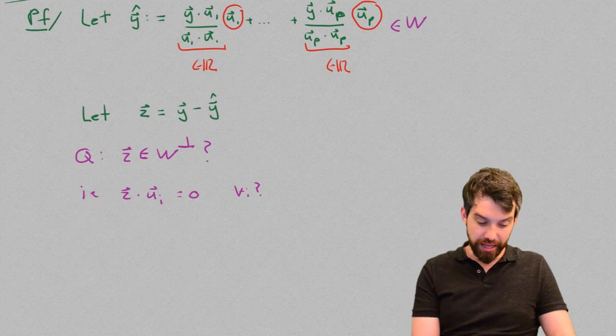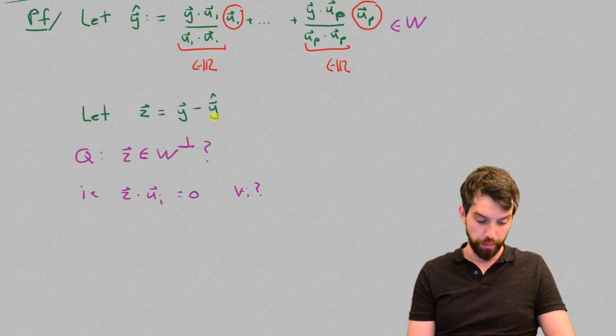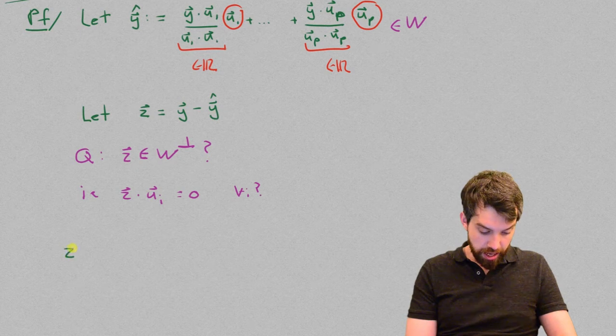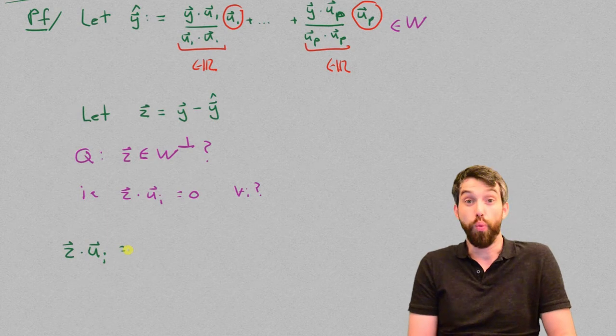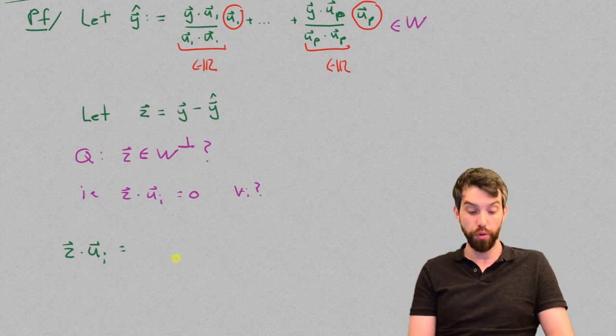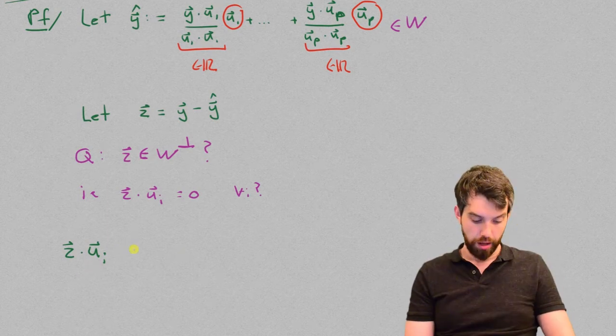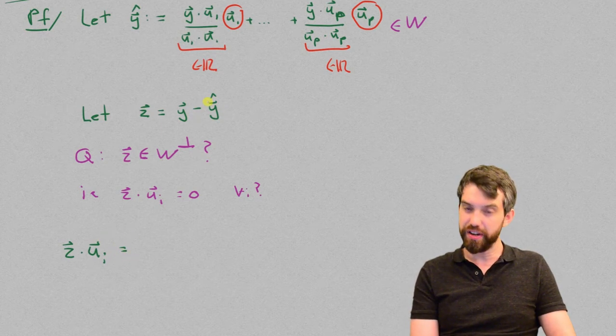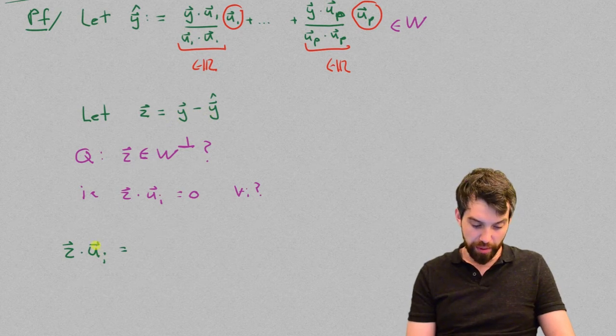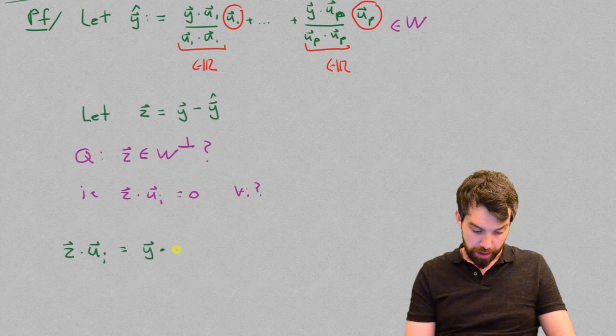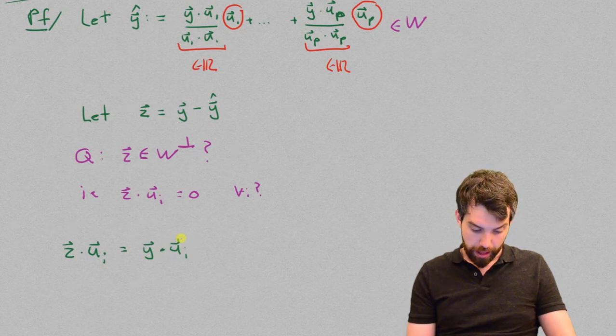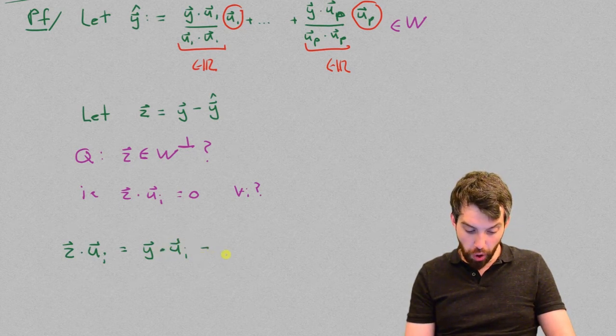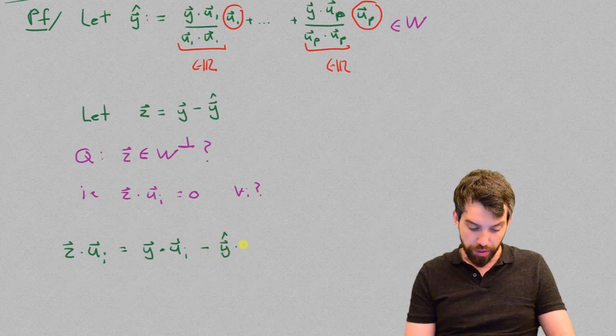Okay? So, we know what z is. There it is. Let's take the dot product with ui. So, z dotted with ui, and I am choosing the generic ui here, but we could use u1 or up any of them, but I need to do them all. So, I am going to do ui generically. Okay. And, this is going to be, by definition, y minus y hat. So, if I am dotting with ui, first I get y dotted with ui. And, then I want to subtract off the y hat dotted with ui.